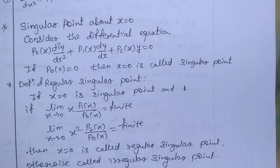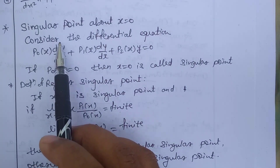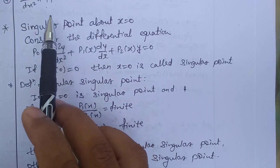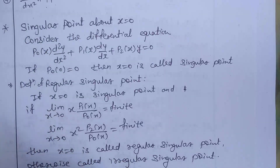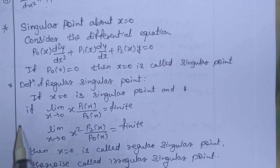Welcome to NSA Maths. Today we are going to learn the next concept: the singular point, or the series solution about the singular point x = 0. In the previous videos we learned the series solution about the ordinary point x = 0. Now we are looking for the solution about the singular point x = 0.